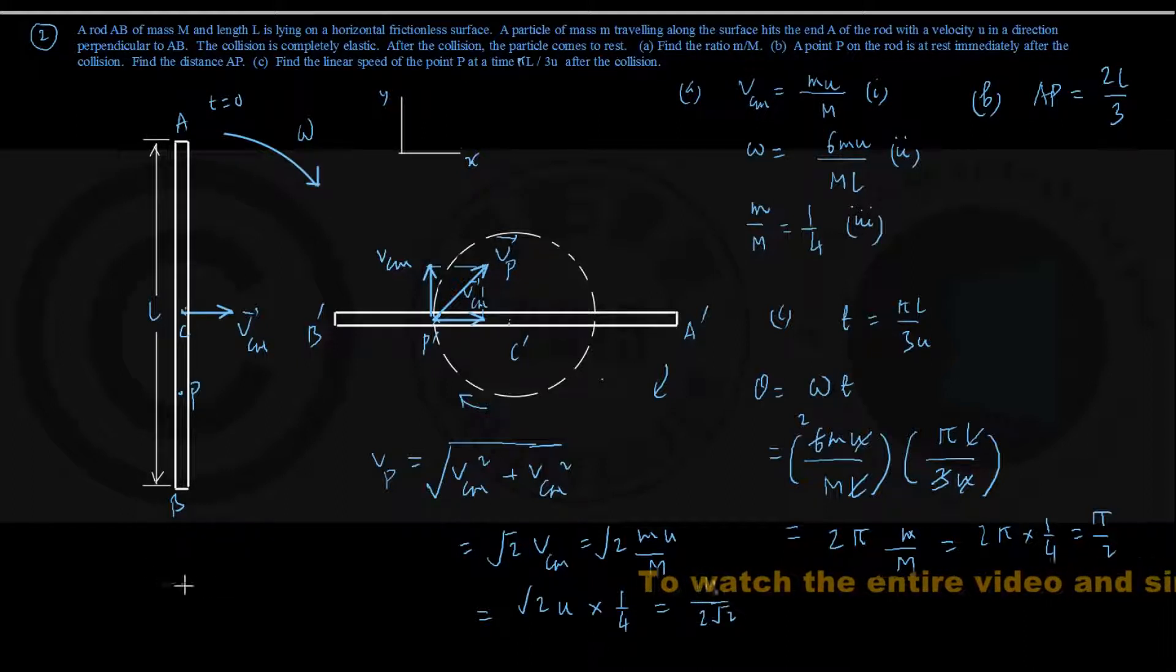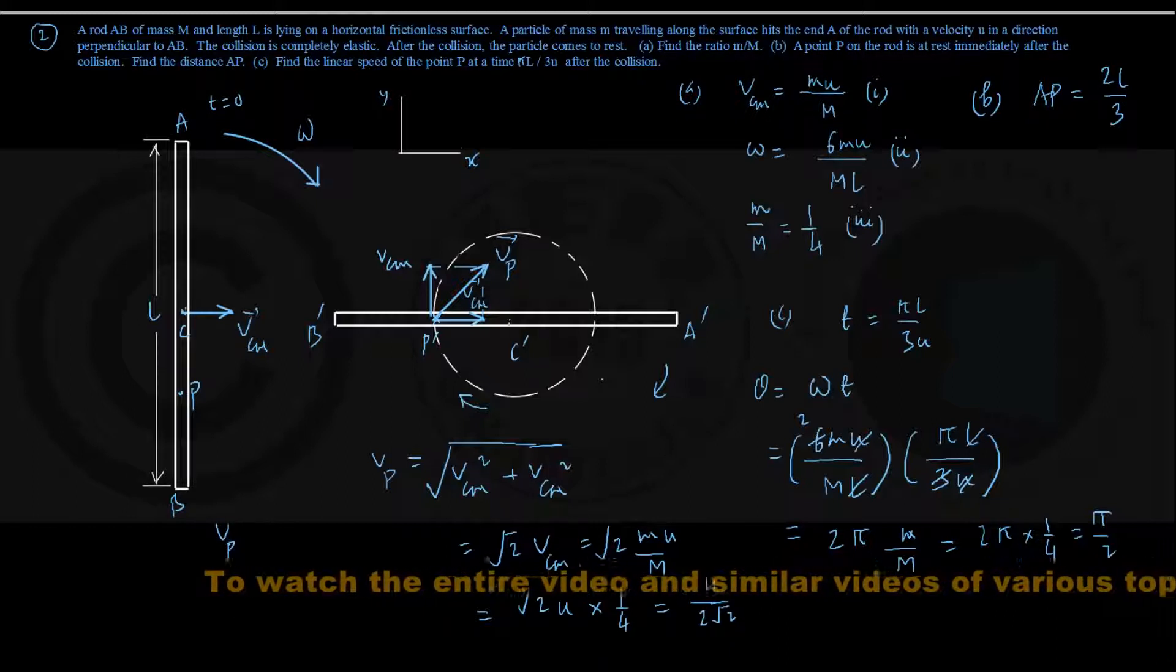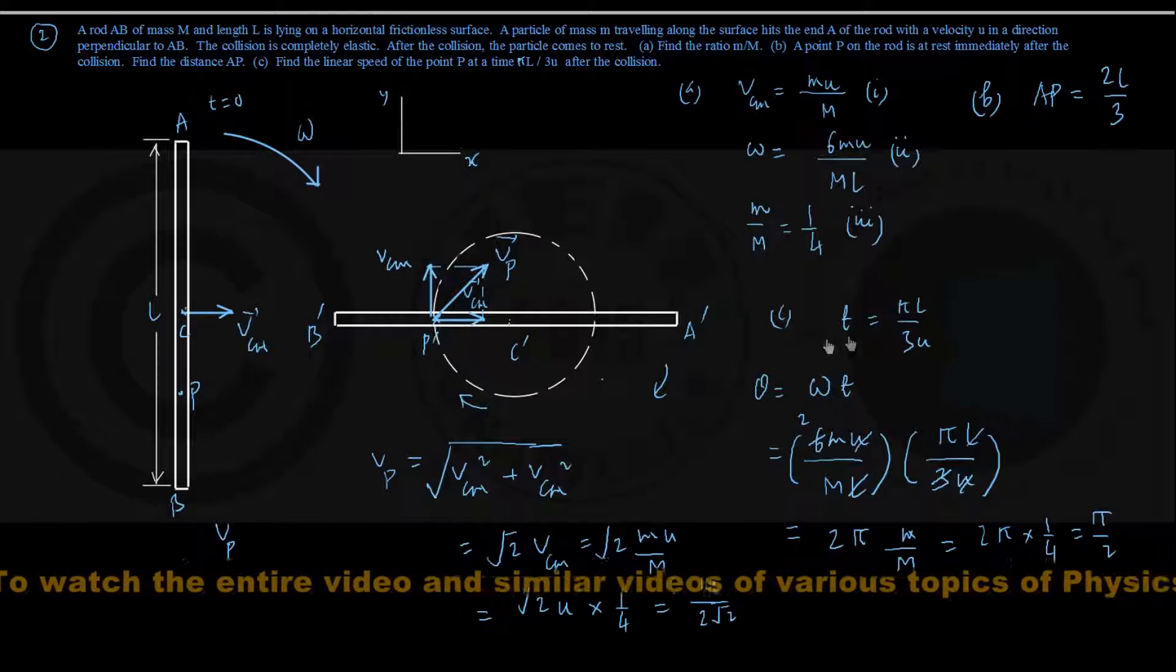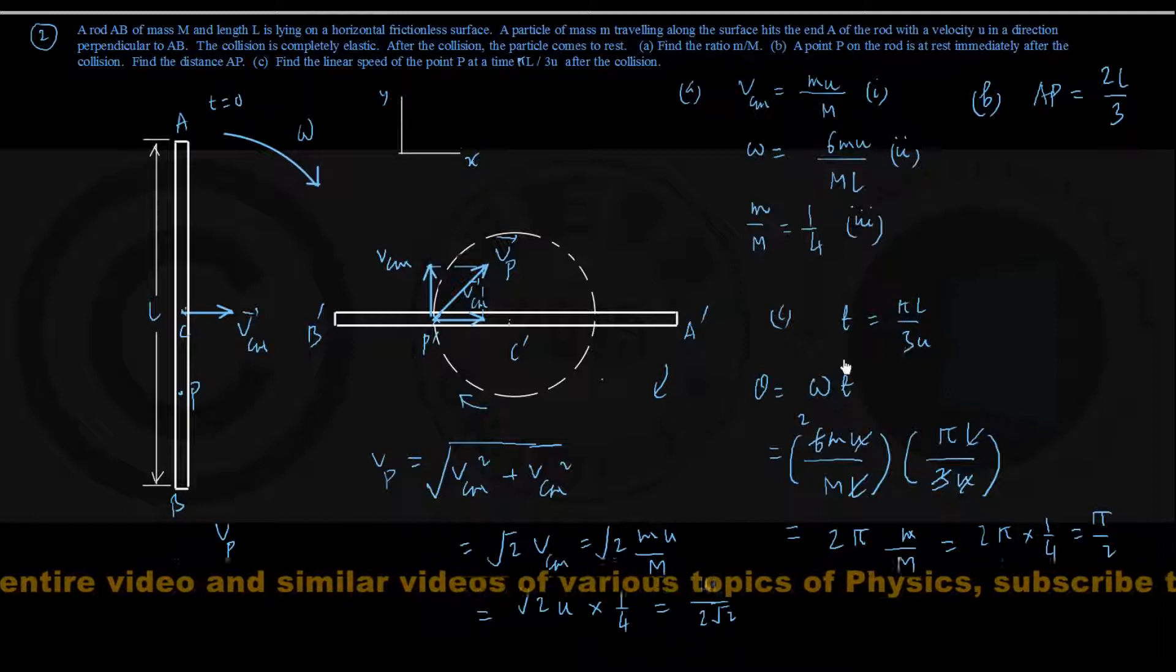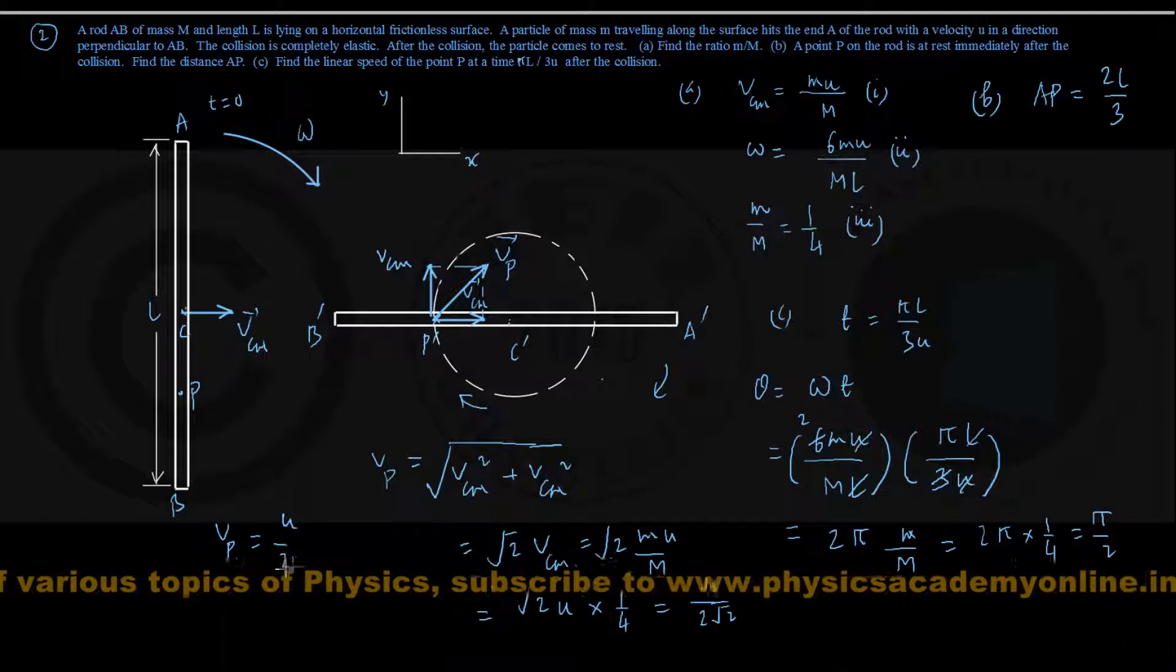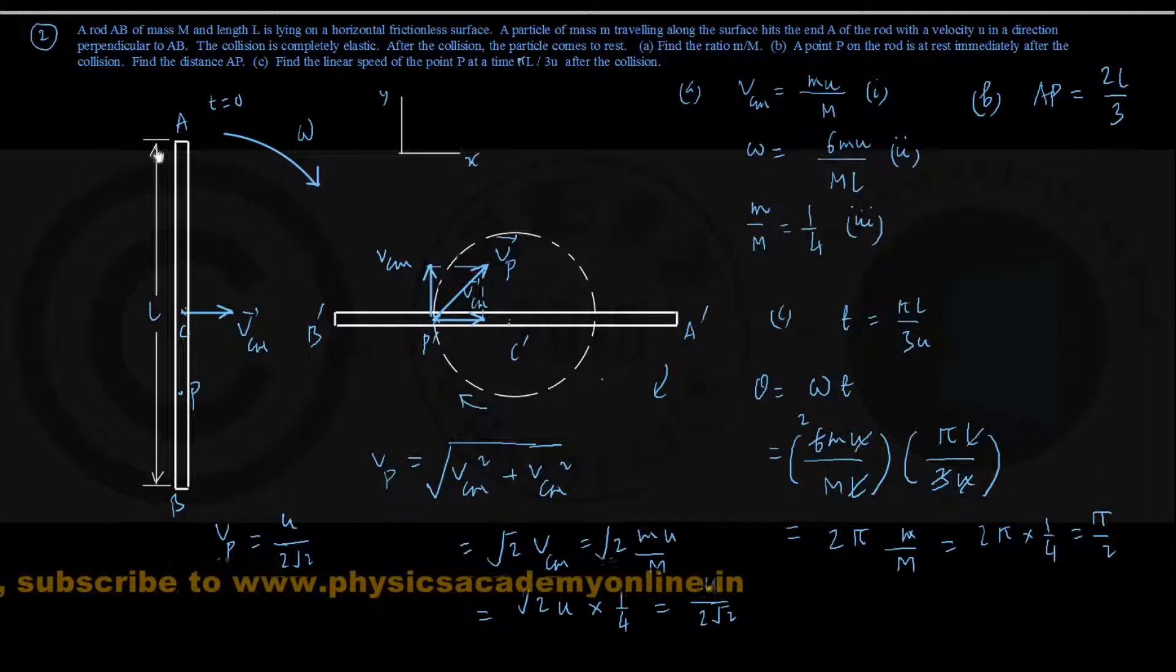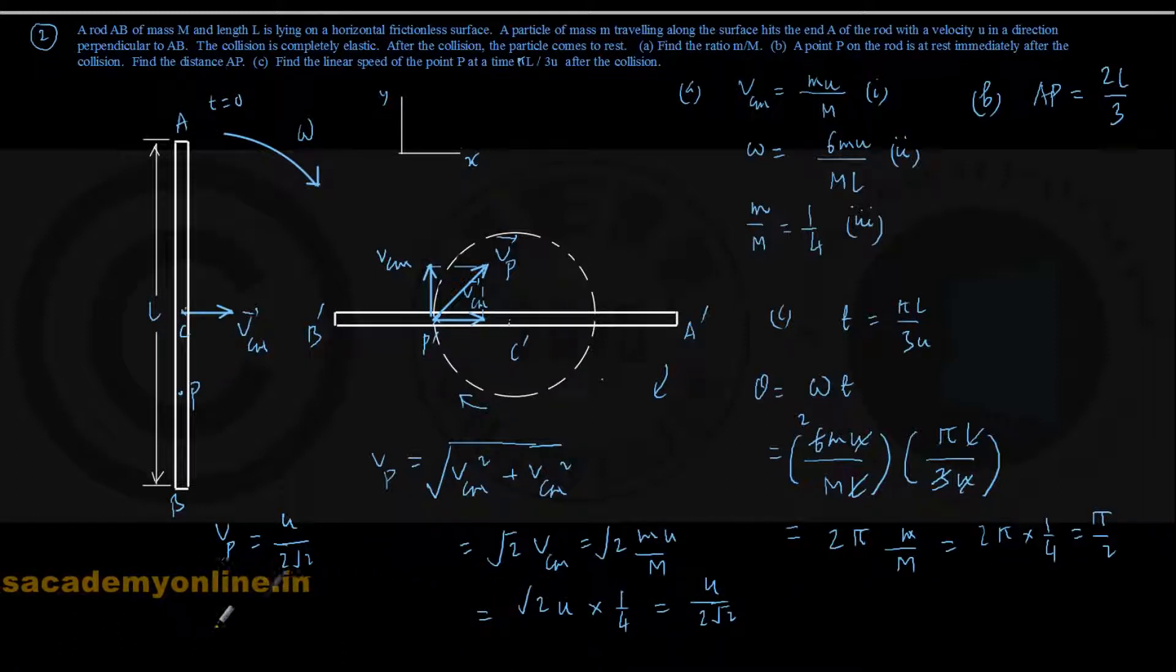So our conclusion is that the speed, linear speed of the point P at the end of a time of πL by 3U, is equal to U by 2 root 2, where U is the speed with which the particle had collided with the rod initially at the point A. And this is the answer of part C of this question.